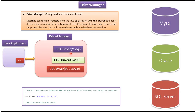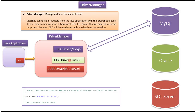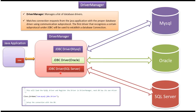In this case, the request is for a MySQL database connection, so it will choose the MySQL-specific JDBC driver and establish a connection to the MySQL database. Similarly, if a connection request is for an Oracle database, Driver Manager will choose the Oracle-specific driver and establish a connection to Oracle. Likewise, if the Java application sends a connection request for SQL Server, Driver Manager will choose the SQL Server-specific JDBC driver and establish the connection.